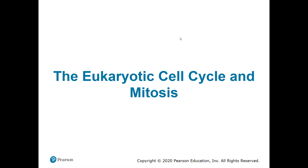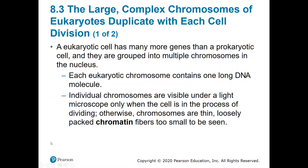Hello everyone. For this video we're going to be looking at the eukaryotic cell cycle and mitosis. In eukaryotic cells compared to prokaryotic cells, eukaryotic cells have a very complicated chromosome system. Eukaryotic cells have many more genes and DNA than prokaryotic cells and they are grouped into multiple chromosomes in the nucleus.